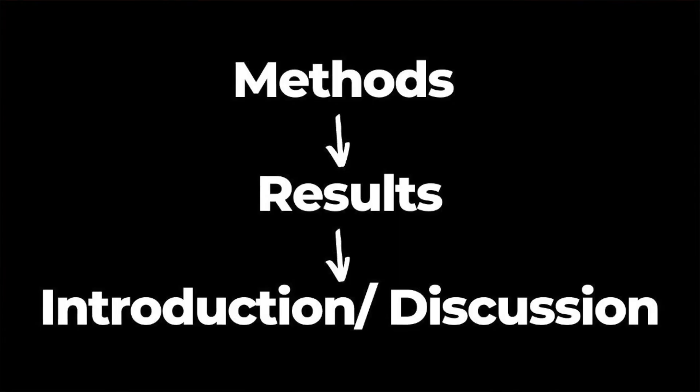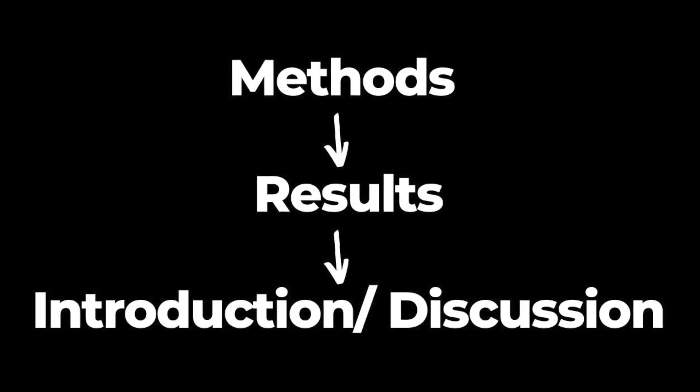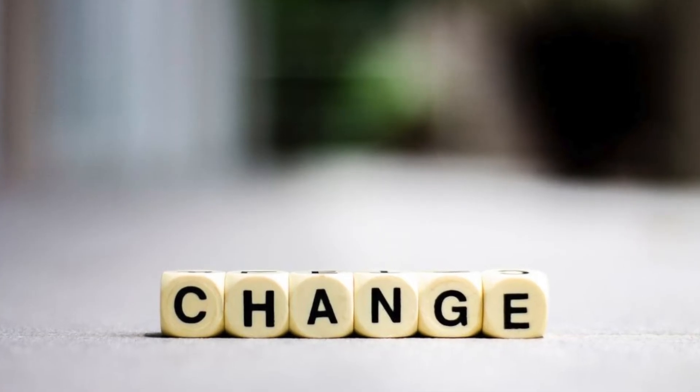Now, which section do you write first? Just because the paper is presented in this sequence does not mean you have to write it in that order. I like to start writing the methods section first, because as mentioned, you would have already written the methods in your research protocol. Next, write the results. Finally, you can write the introduction or discussion. Some people like to write the introduction first because they are clear about the research question, but oftentimes after the results come out, the story would have changed. I personally prefer to write the discussion first, followed by the introduction.